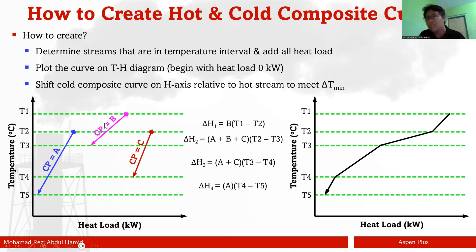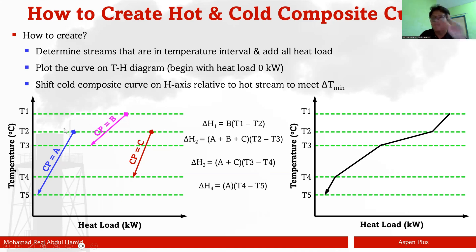The second step is to create temperature intervals. Since I have five temperatures — T1, T2, T3, T4, T5 — I create four intervals: T1 to T2 is the first interval, T2 to T3 is the second, T3 to T4 is the third, and T4 to T5 is the fourth.